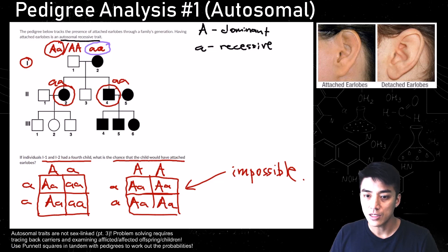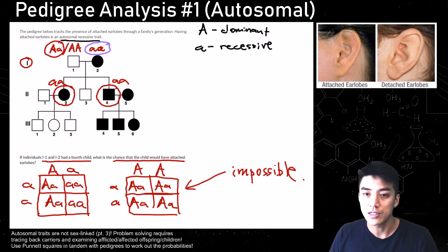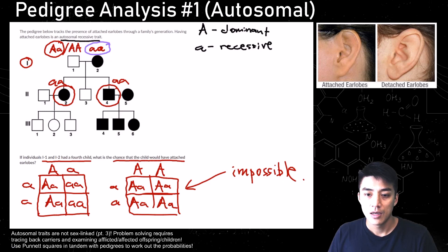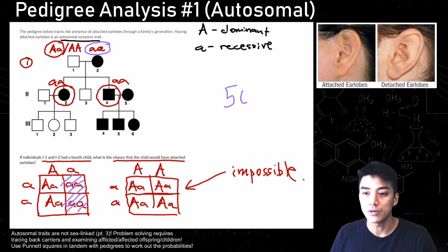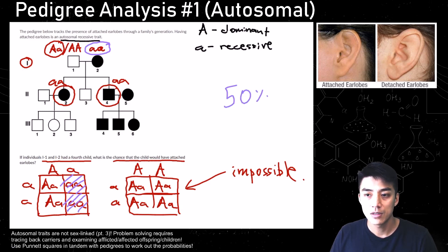That means you have to go with the first scenario where the father is heterozygous, big A little a. Looking at the Punnett square, you can see there is only a 50% chance that this fourth child would have the attached earlobes.